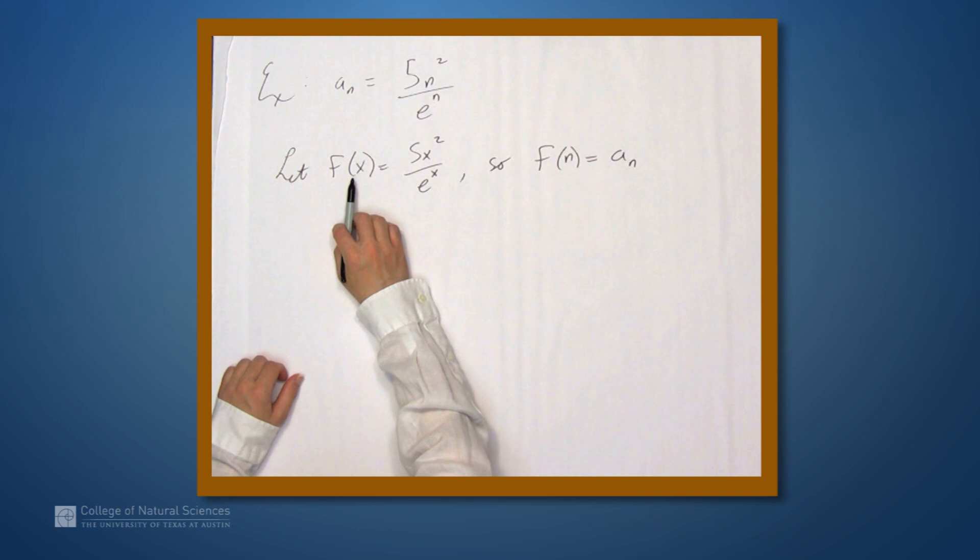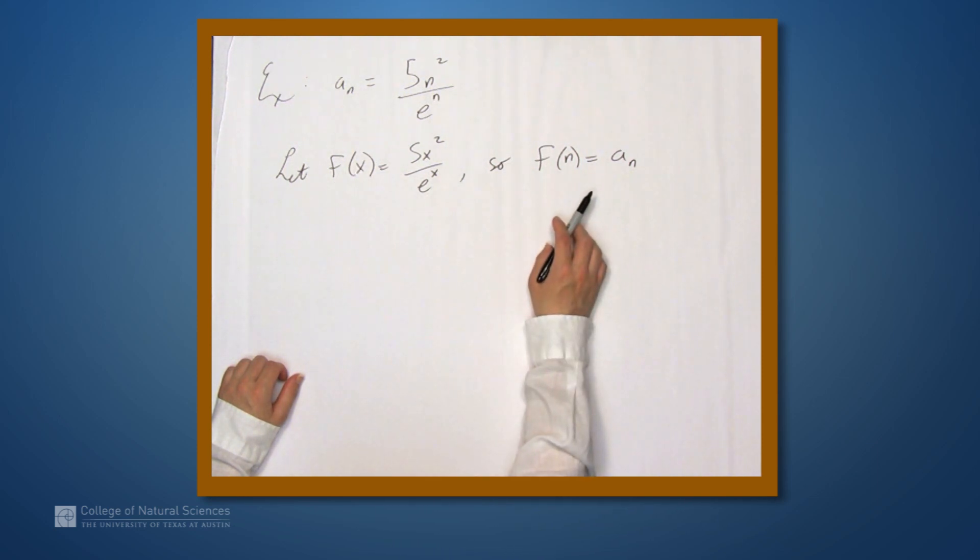So if we can show that f of x converges as x goes to infinity—excuse me, if the limit of f of x exists as x goes to infinity—then we can show that the sequence a sub n converges to that same value.